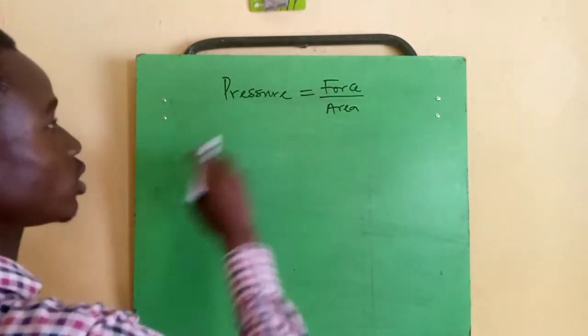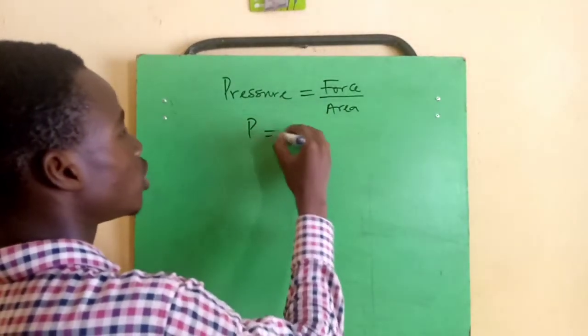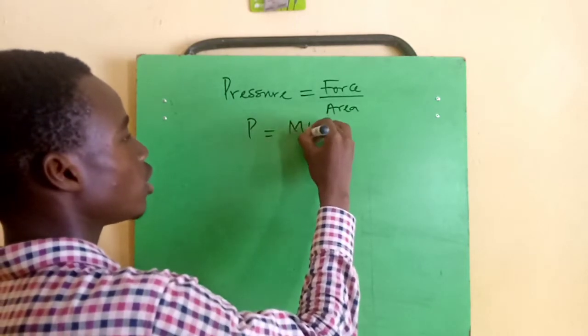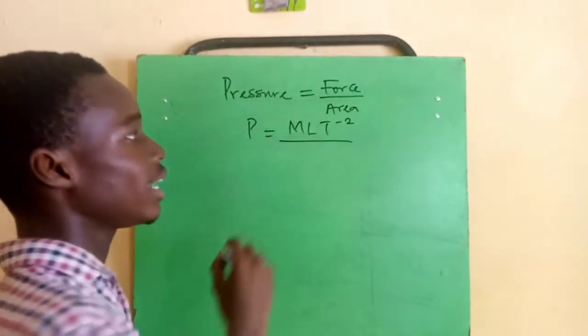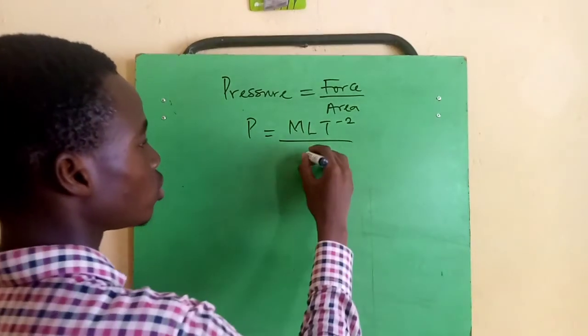Now we don't need to solve for that again because we already know what the dimension of force is. So pressure P will be equal to MLT raised to power minus two over area. Now area is measured in meter square, so we'll have L squared.